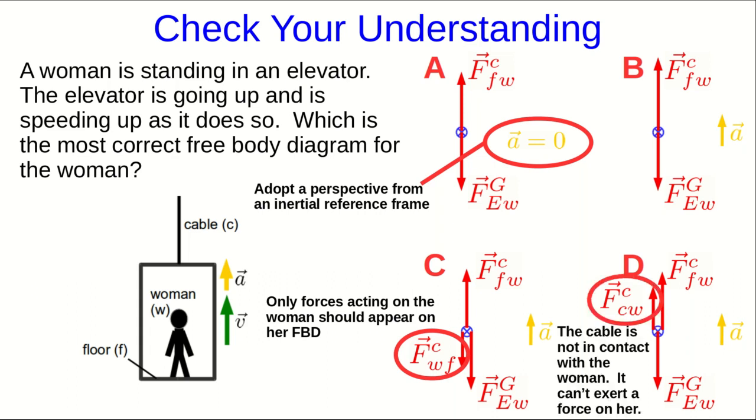Also, the cable is not touching the woman, and so it can't exert a force on her. You may be thinking, surely she wouldn't be accelerating up if not for a force by the cable, and that's true. But that force isn't on her, it's on the elevator. It affects how large the force is by the floor on her, but it is still the force on the floor which will affect her.